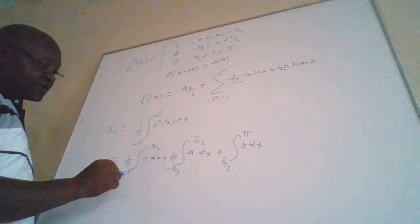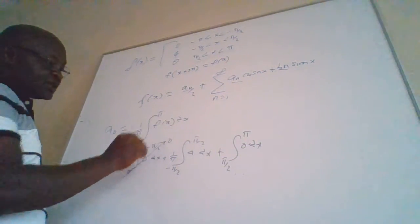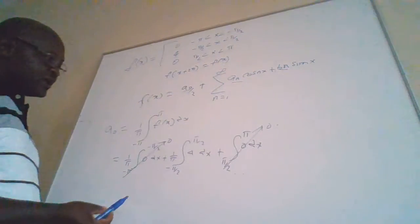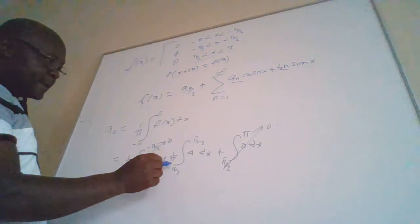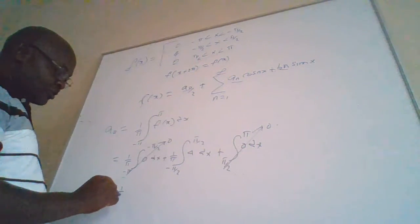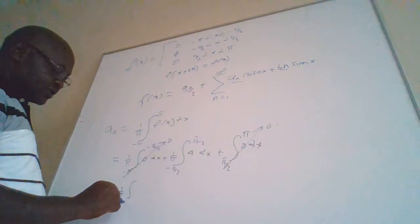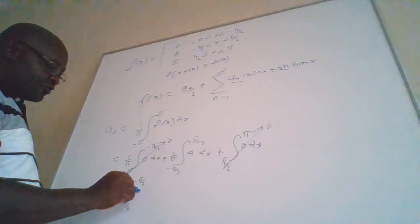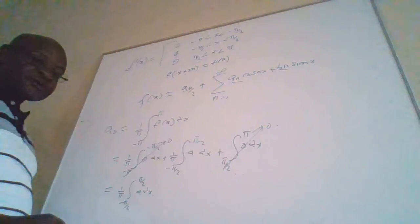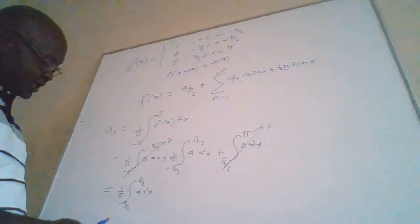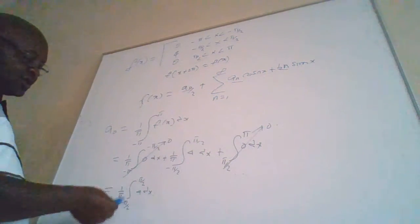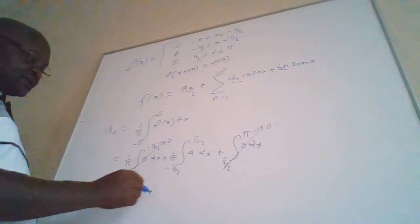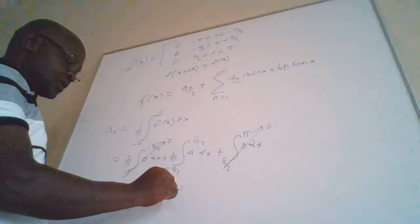Because we are multiplying by 0, the first and last integrals cancel out to be 0. We remain with 1 over π times the integral from negative π over 2 to positive π over 2 of 4 dx. Now when you integrate, this integral equals 1 over π.